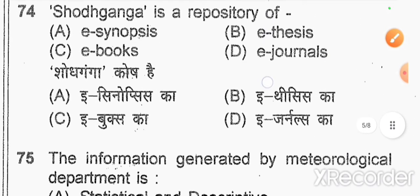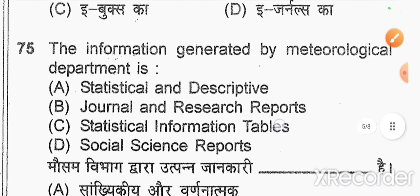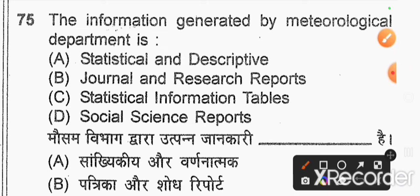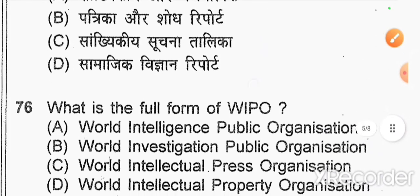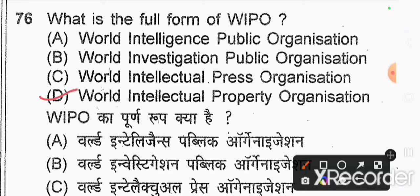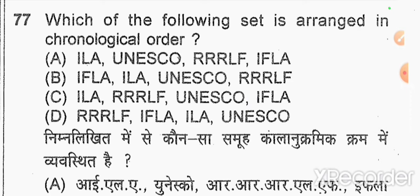Question number 74: Shodhganga is a repository of — option B — theses. Question number 75: the information generated by the meteorological department — option A. Question number 76: what is the full form of WIPO? Option D — World Intellectual Property Organization. Question number 77: which of the following set is arranged in chronological order? Option B.